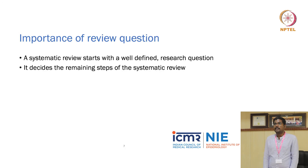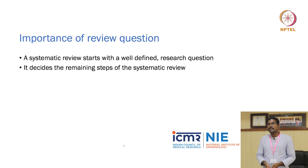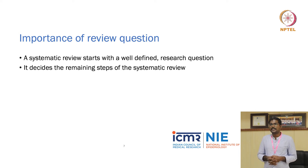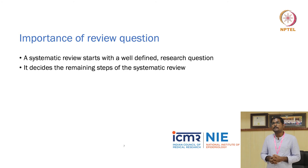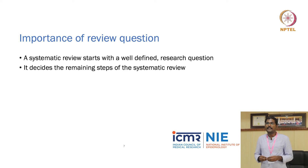A systematic review starts with a well-defined research question. It might come to you informally — from a paper on your desk or a conversation over coffee. This step decides everything else in the systematic review, as all subsequent steps are based on the review question. Make sure you invest enough time and seek clarifications from peers to arrive at a clearly defined and accurate review question.